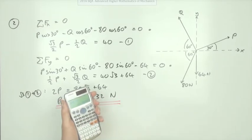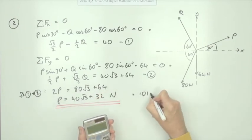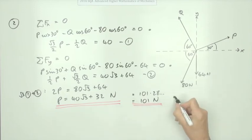So typing that in gives you 101.28, and so on, or rounding it to three figures, 101 newtons. Now that's a mark.